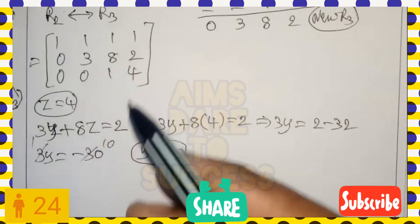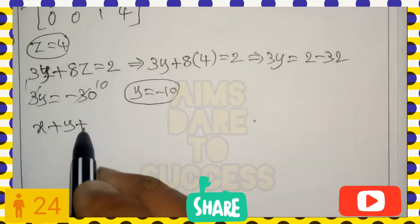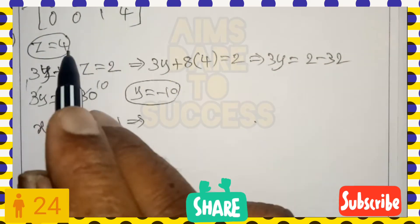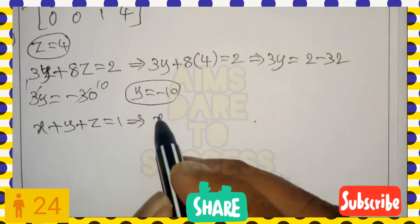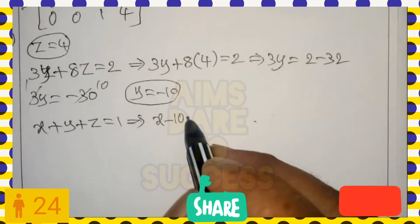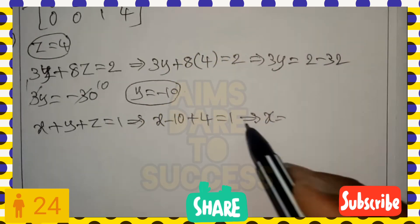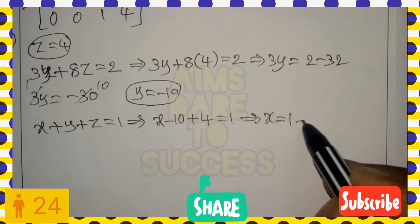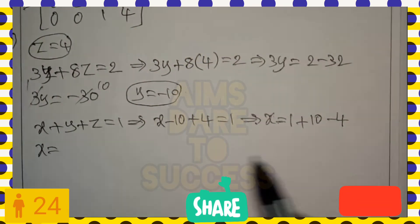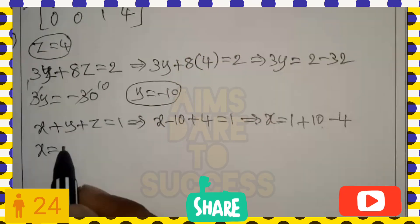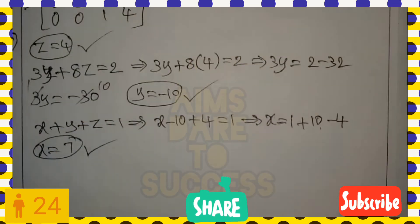From the first row, x plus y plus z equals 1. Substituting y = −10 and z = 4: x plus (−10) plus 4 = 1. Moving the constants to the right side: x = 1 plus 10 minus 4 = 11 minus 4 = 7. Therefore, x = 7, y = −10, and z = 4.